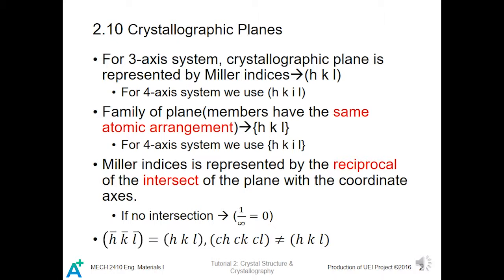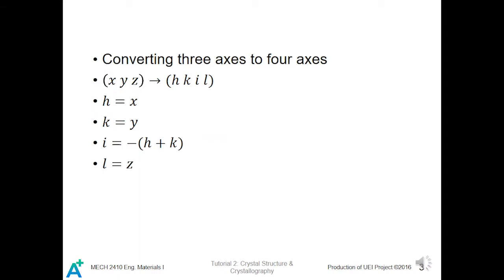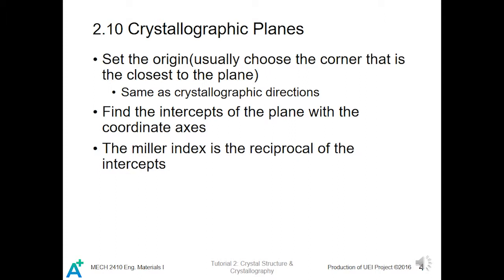The multiple of a plane, c·h, c·k, c·l, is not equal to h, k, l — unlike crystallographic directions. We also have a conversion formula which can convert planes from the three-axis to the four-axis system. For h, k, l we have the following equation.